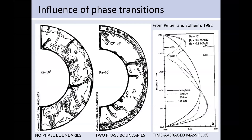The motivation is that we have known for a long time that phase transitions are important for the style of mantle convection. Here on the left you see models from 1992: the model on the left is one without phase transitions, and these black lines illustrate the temperature. Without phase transitions, both upwellings and downwellings can go through the whole mantle — whole mantle convection. The model on the right has a phase transition at 660 km, which inhibits the flow, stalling both upwellings and downwellings — a model of layered mantle convection.